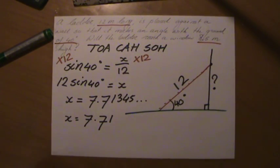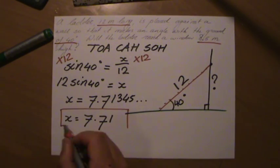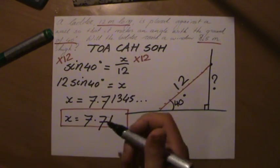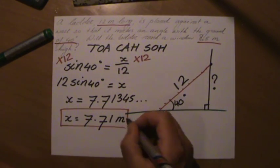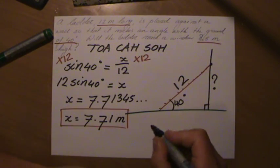7.71, and if the question would be, well how high will the ladder reach up to the wall, then your answer would be well, 7.71 meters high, because we are talking about meters, that was the unit.